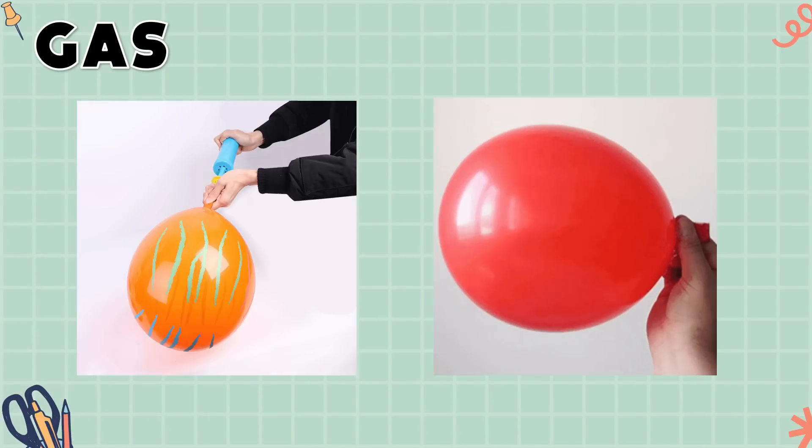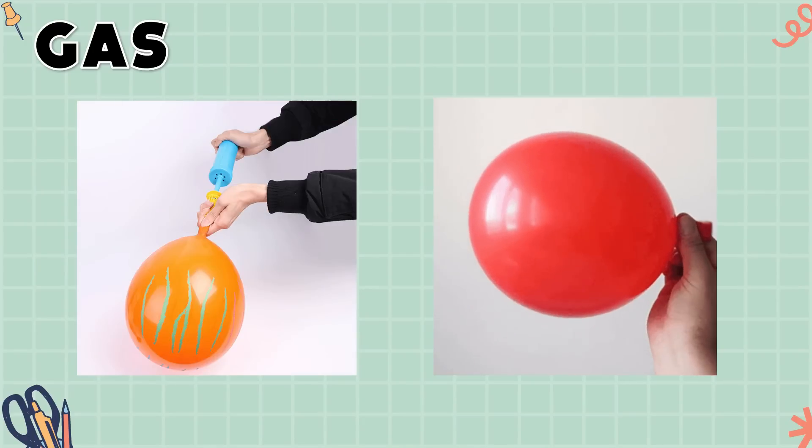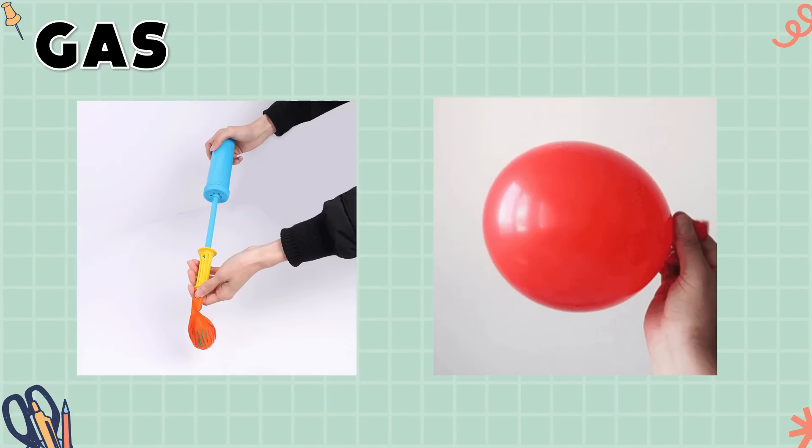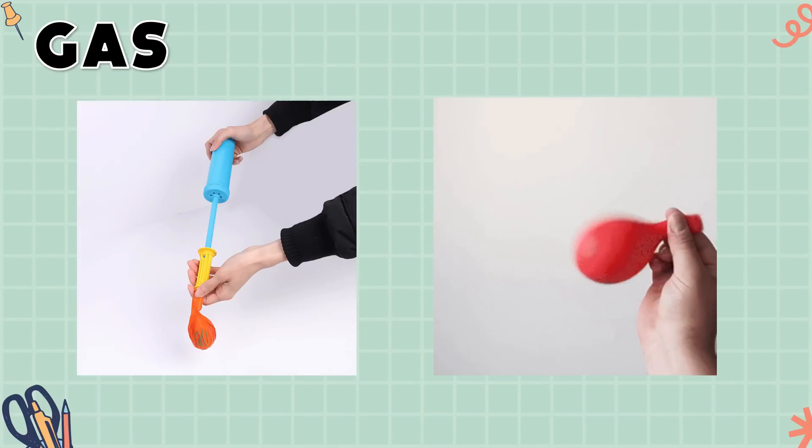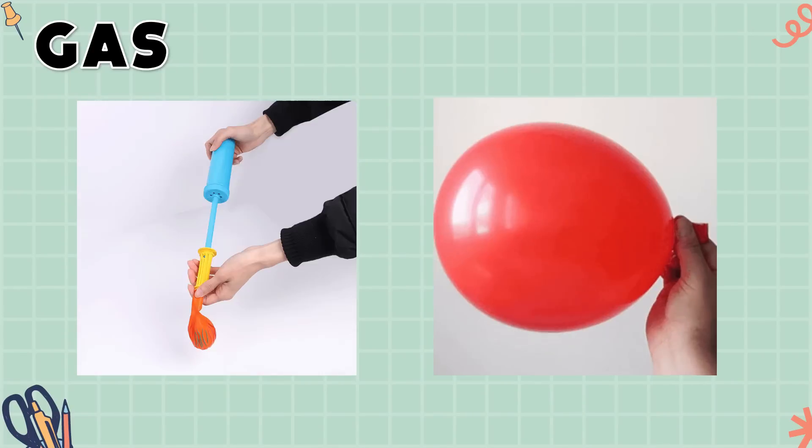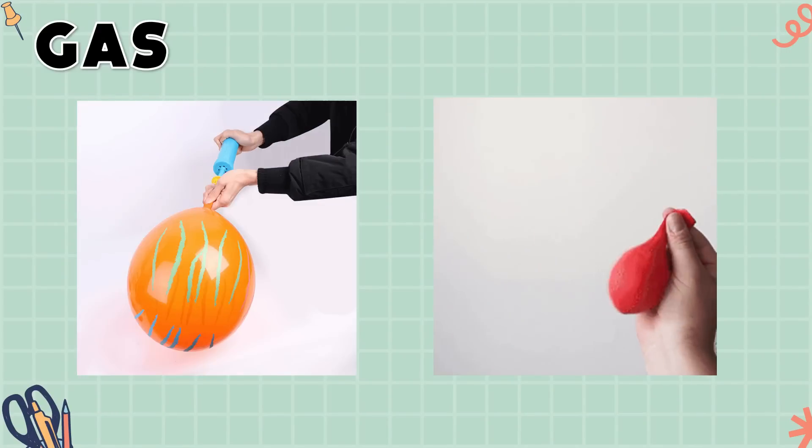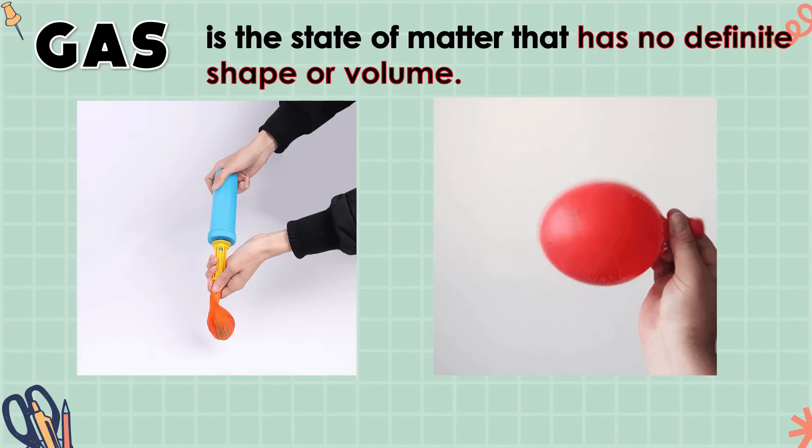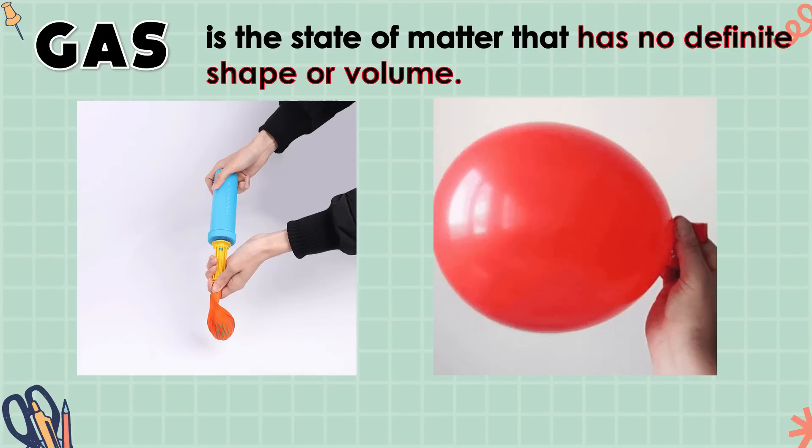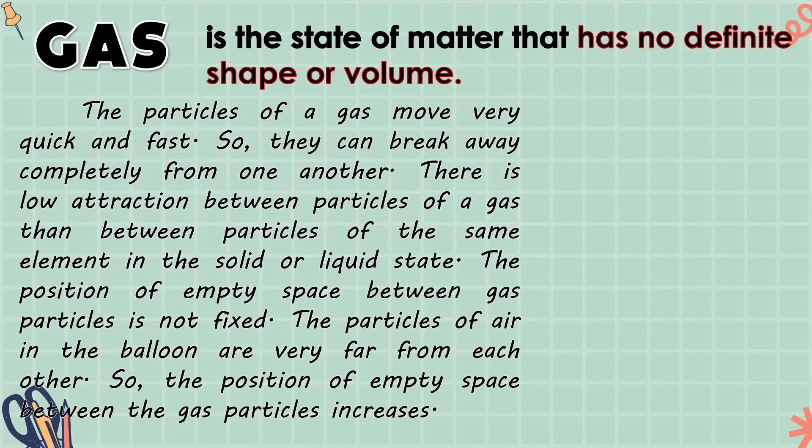At ang panghuli ay ang gas. Nasubukan mo na bang mag-inflate o mag-deflate ng lobo? What have you observed? We can say na ang balloon ay mag-inflate kapag nilagyan ito ng hangin sa loob at ito naman ay mag-deflate kapag ito ay pinres o binitawan at ang hangin sa loob ng lobo ay lalabas. Ngunit, bakit kaya? It is because of the state of matter called gas. And gas is the state of matter that has no definite shape or volume.